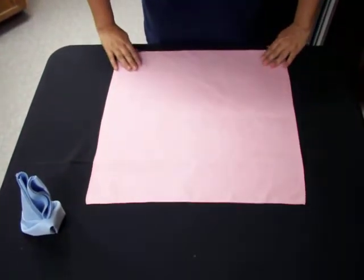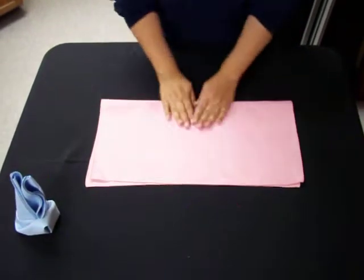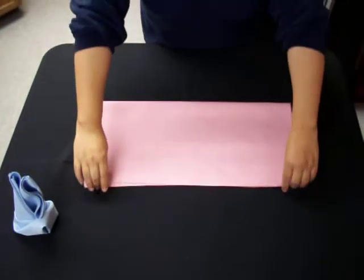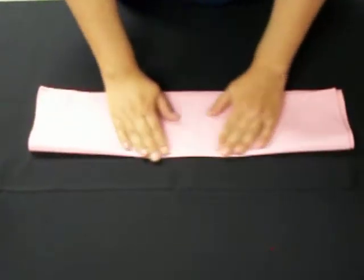You're going to take your napkin, fold it in half. While you fold it, press on the crease. You're going to bring the top down, again pressing on the crease.